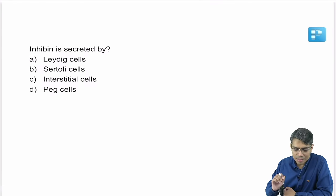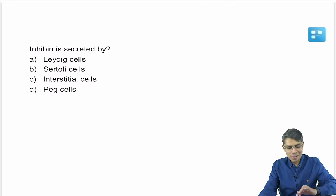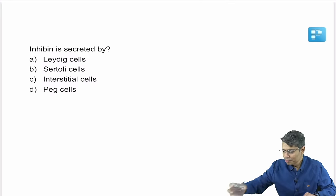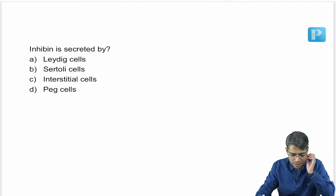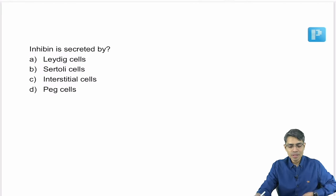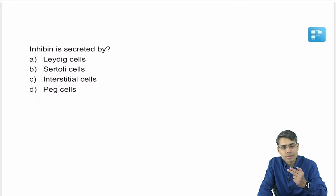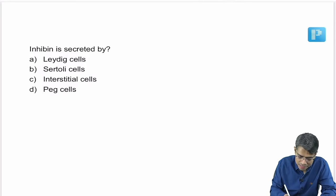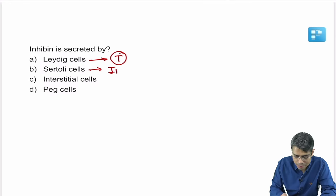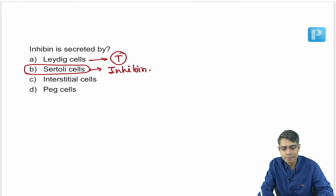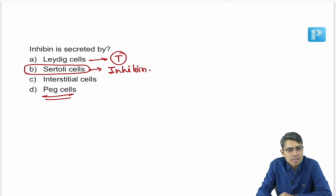We need to remember the functions of Leydig cells and Sertoli cells. Leydig cells are responsible for secretion of testosterone, and Sertoli cells are responsible for secretion of inhibin. So the answer is Sertoli cell. Leydig cell is also known as the interstitial cell. Peg cells are found at the level of the fallopian tube.